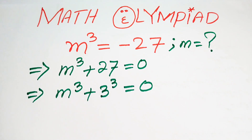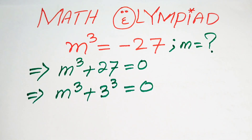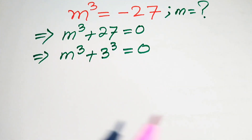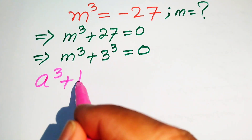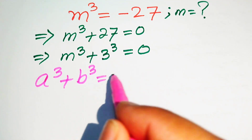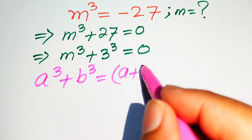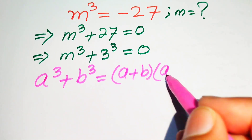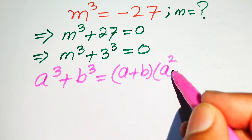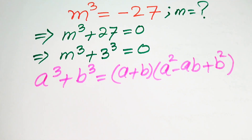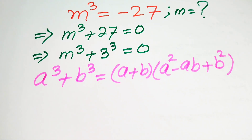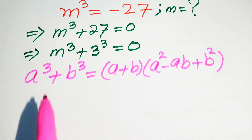We need the sum of cubes formula in order to solve this problem. We write the cubic formula: a cubed plus b cubed equals (a plus b) times (a squared minus ab plus b squared). This is the cubic sum of cubes formula which we apply to the above equation.